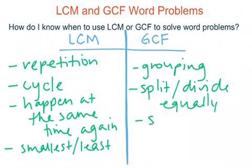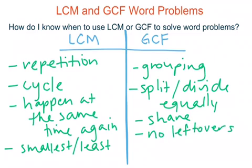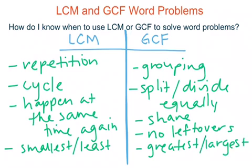We're also going to see if we're sharing anything — sharing would be really important if we're using GCF. We want to look for the keyword 'no leftovers,' because we're sharing things equally. And finally, if we think about the phrasing of greatest common factor, we might also see words such as 'greatest' or 'largest,' which would be key phrases to identify that we're using factors to solve a word problem.